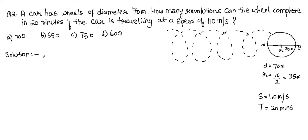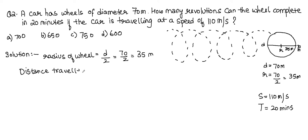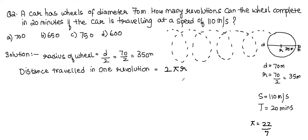Step one: radius = diameter ÷ 2 = 70 ÷ 2 = 35 metres. Step two: distance traveled in one revolution equals the circumference = 2πr. We know π = 22/7, so distance = 2 × (22/7) × 35.